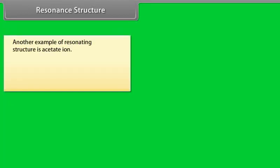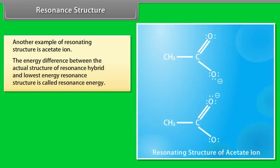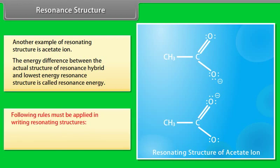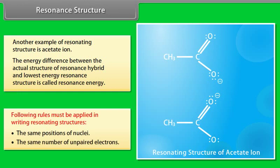Another example of resonating structures is the acetate ion. The energy difference between the actual structure of the resonance hybrid and the lowest energy resonance structure is called resonance energy. When writing resonating structures, the rules require the same positions of nuclei and the same number of unpaired electrons.